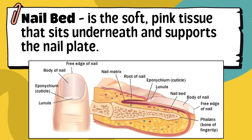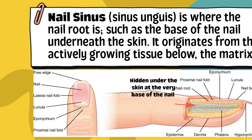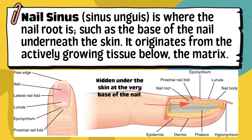Ninth, the nail bed is the soft, pink tissue that sits underneath and supports the nail plate, acting as a cushion and support for the growing nail. Tenth, the nail sinus — sinus unguis — is where the nail root is located, at the base of the nail underneath the skin. It originates from the actively growing tissue below the matrix. This is the hidden part under the skin at the base of your nail where new nail cells are produced.